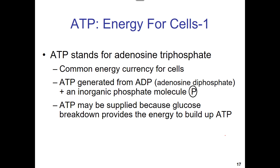ATP stands for adenosine triphosphate. It's one of the building blocks of RNA. It's built from a five-carbon sugar — one, two, three, four, five — that's ribose. That's just the carbon backbone.